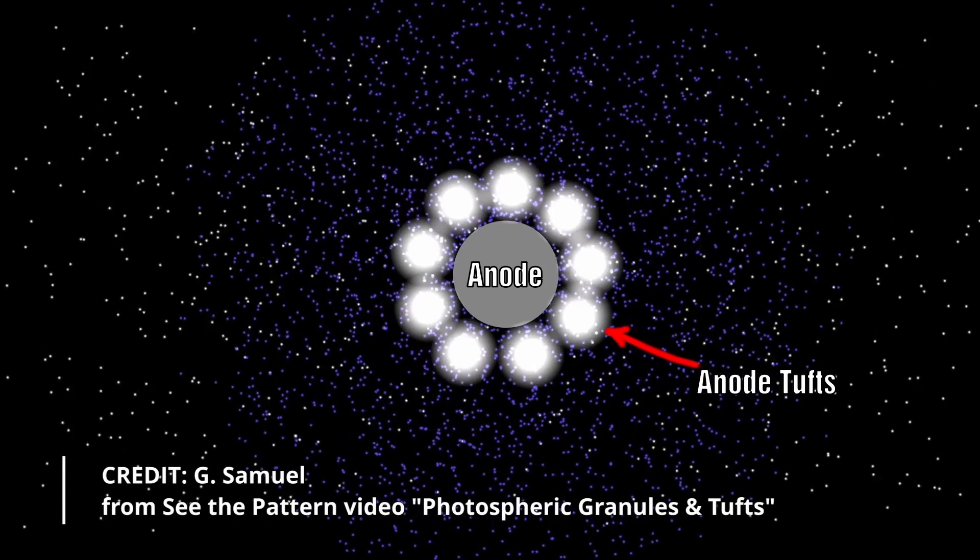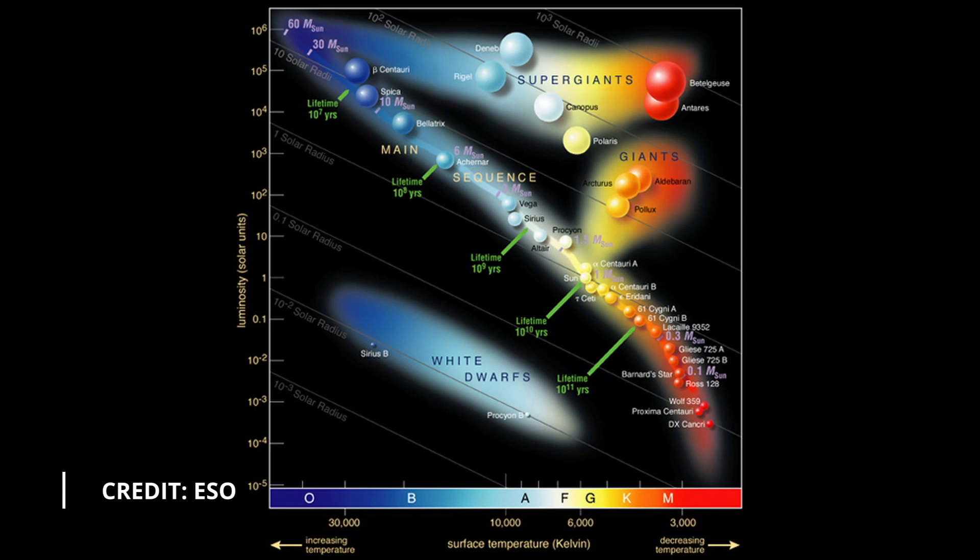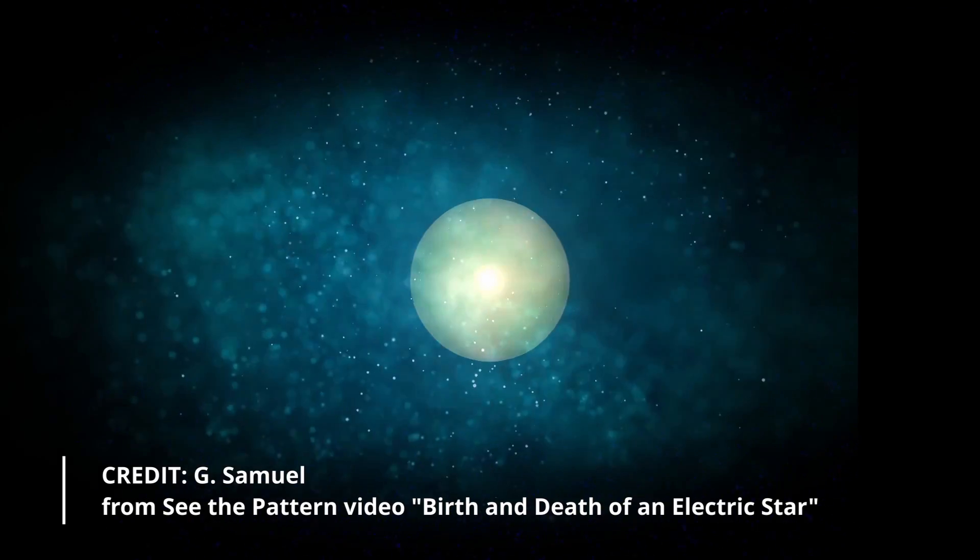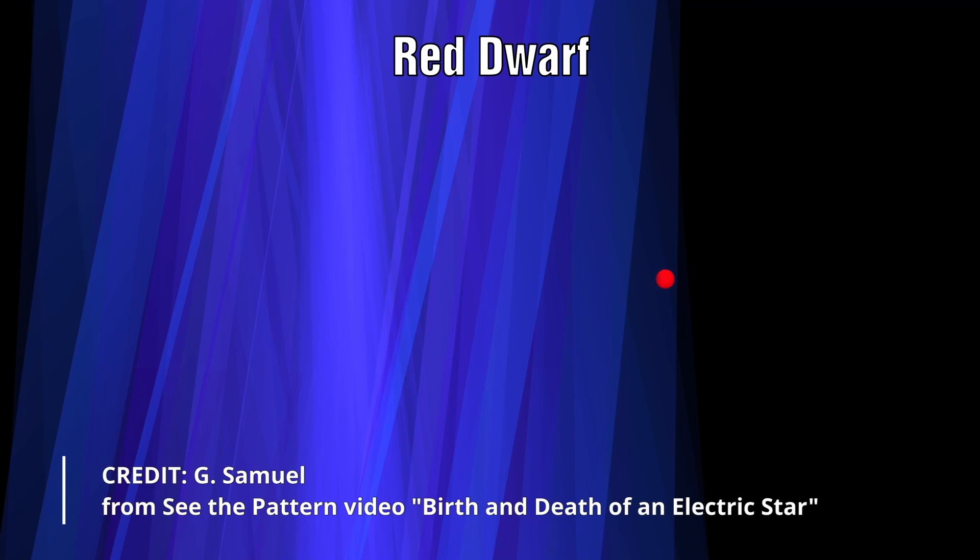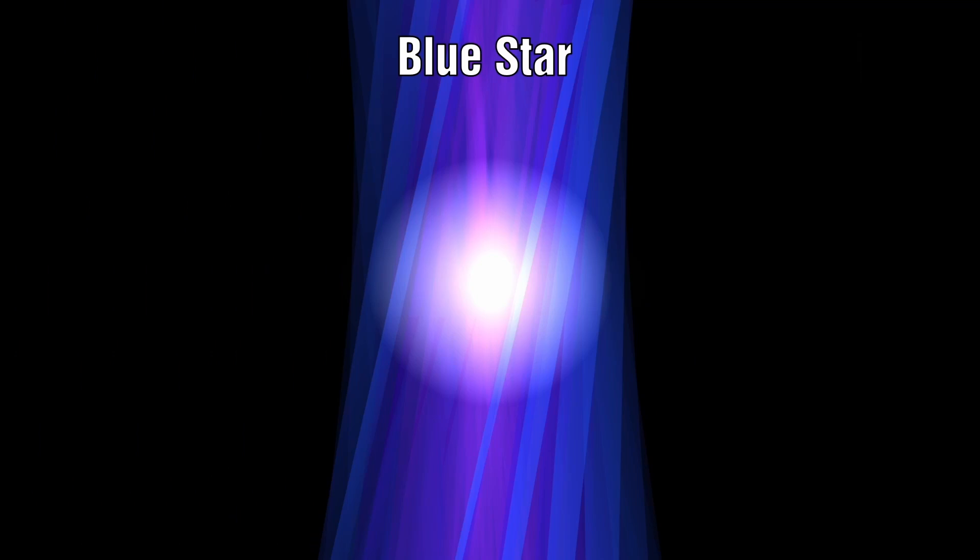In the Electric Universe, stars are not thermonuclear but instead are electrically powered. So if this is the case, why would we see more red dwarf stars than yellow dwarf stars? The assumption is that the type of star is not determined by what stage it is on in the mainstream's idea of the evolution of a star. Instead, it is determined by the electrical input and the environment the star resides in. Red dwarf stars are just receiving a lower input compared to a yellow dwarf star, which in turn receives less compared to a blue star.